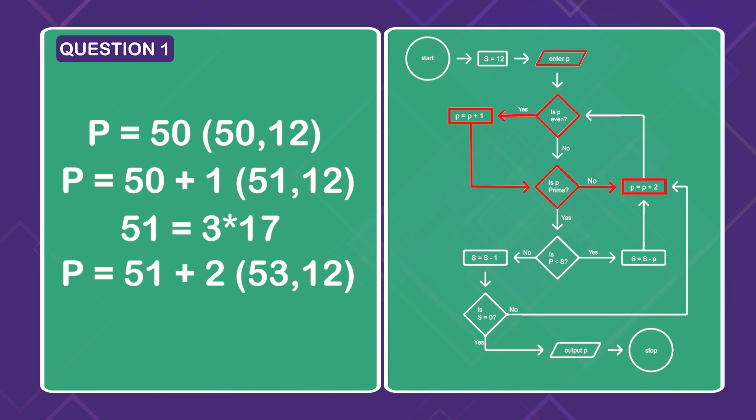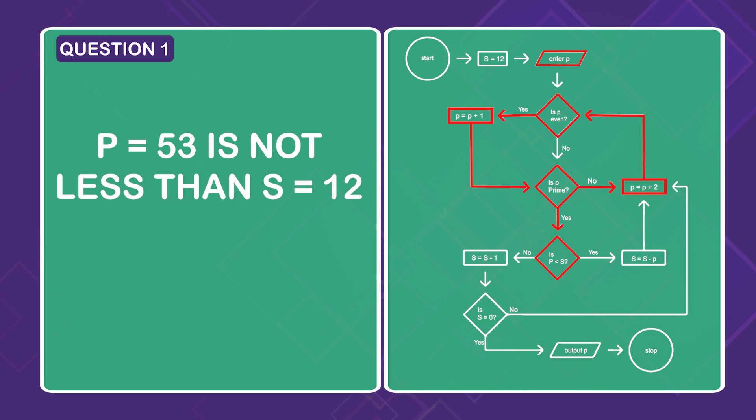Adding 2 to p gives (53, 12). Then p is odd, and now 53 is in fact prime. Drop down to the lower decision diamond. p equals 53 is not less than s equals 12. So subtract 1 from s to get (53, 11). We see s is not 0. So back up to the upper loop.